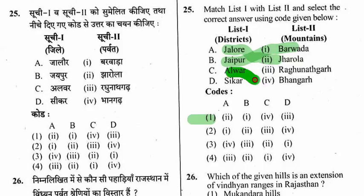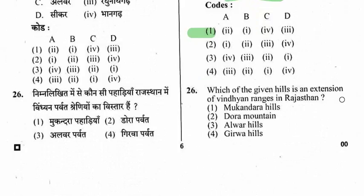Question 26: Which of the following hills is an extension of the Vindhyan range in Rajasthan? Options are Mukundra Hills, Dura Mountain, Alwar Hills, and Girwa Hills. The right option is the first one — Mukundra Hills.